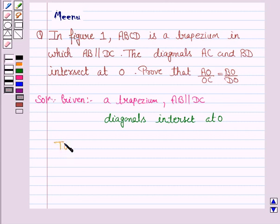Let's now write what we have to prove. We have to prove that AO upon OC is equal to BO upon OD.